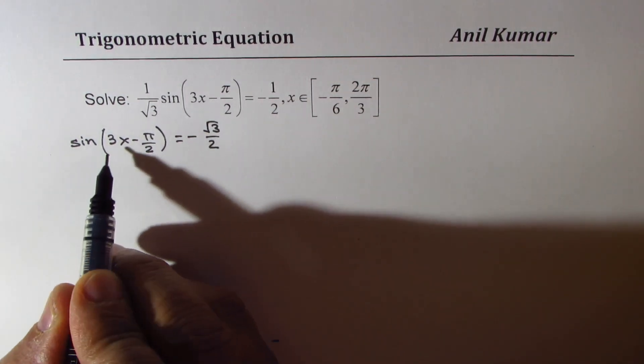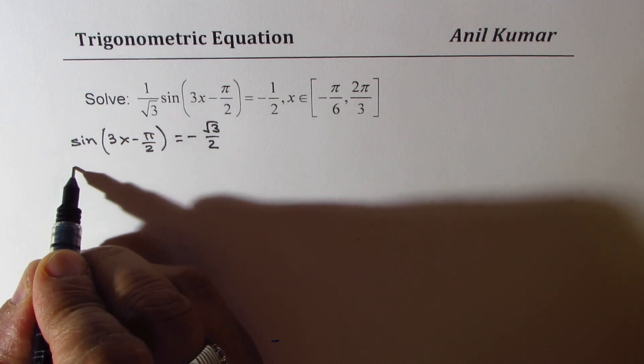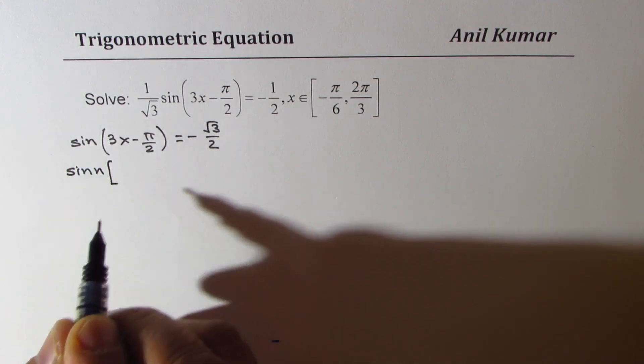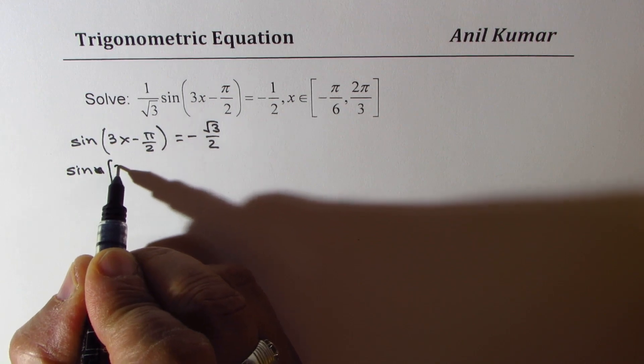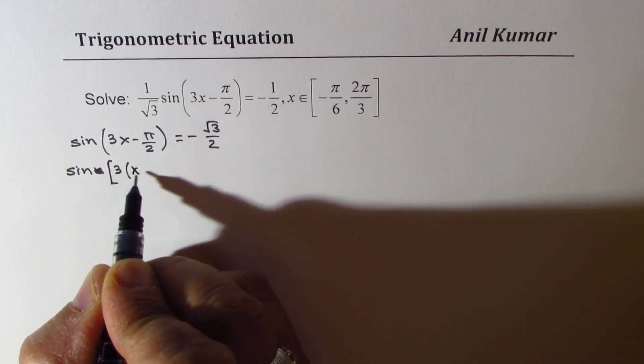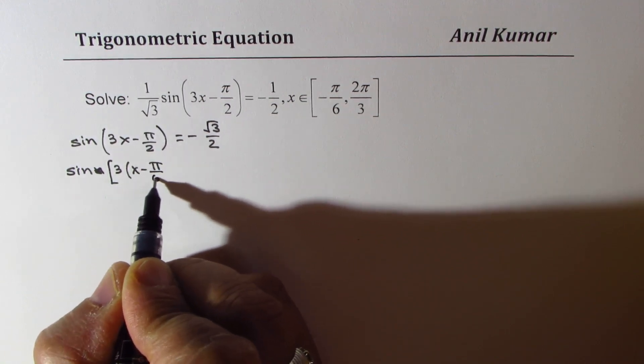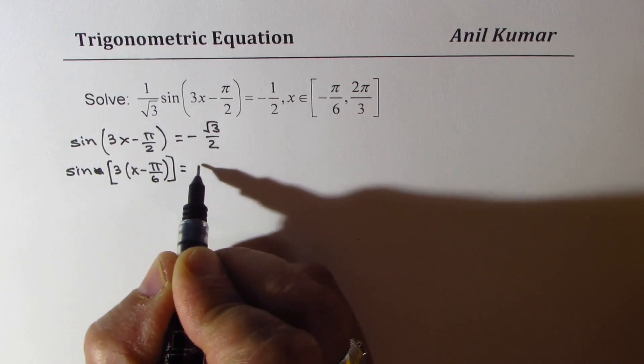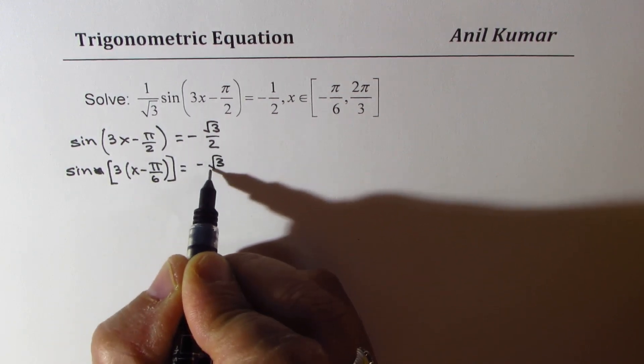Now strictly speaking, I should factor this 3 out so that I know exactly what my transformations are. Factoring 3 we get sine of 3 times x minus pi by 6 equal to minus square root 3 by 2.